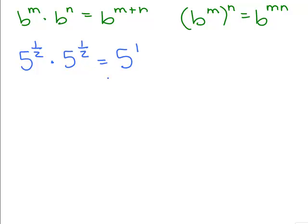So basically 5 to the 1 half times 5 to the 1 half is 5 to the first power, which is just 5. So what I want you to think about is what number times itself is going to equal 5, and that would be the square root of 5 times the square root of 5.